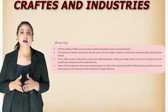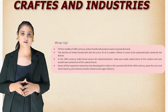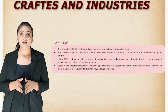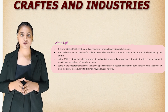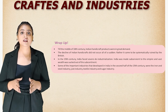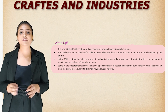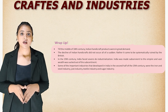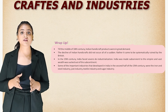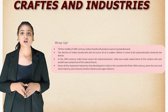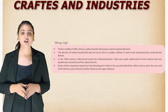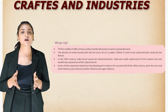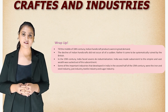Students, let's wrap up and see what we have learned. Till the middle of the 18th century, Indian handicraft products were in great demand. The decline of Indian handicrafts did not occur all of a sudden — rather, it was systematically ruined by the British. In the 19th century, India faced severe de-industrialization and was made subservient to the empire, with vast wealth sucked out of the subcontinent. Some important industries that developed in India in the second half of the 19th century were the iron and steel industry, jute industry, textile industry, and sugar industry. We'll meet again in the next class.